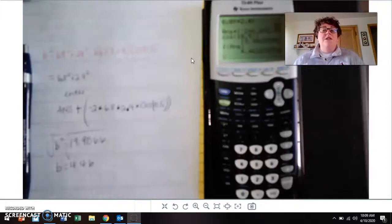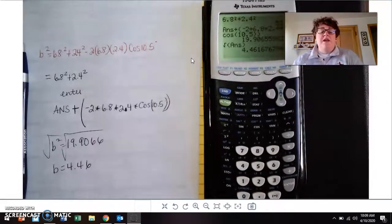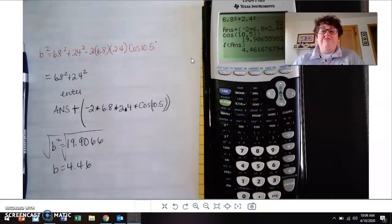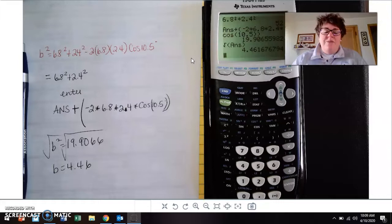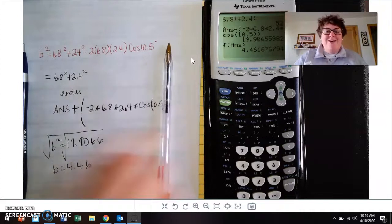So those are the two ways that you're doing, that you're going to be doing the law of cosine. So hopefully that calculator example helped you as you input. Again, if you're somebody who puts it all in all together, you're definitely going to have to put some parentheses in there to maintain order of operation. Hope you have a great day.